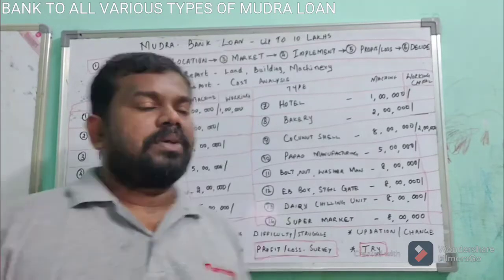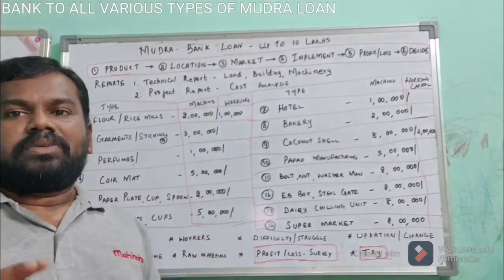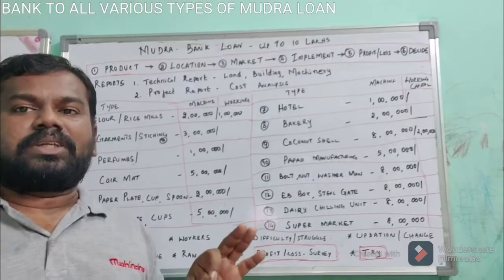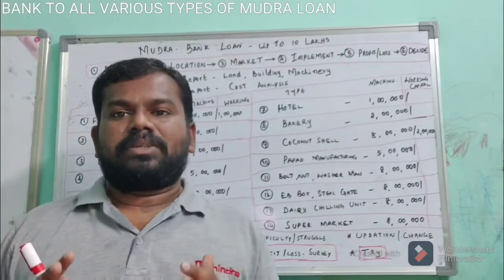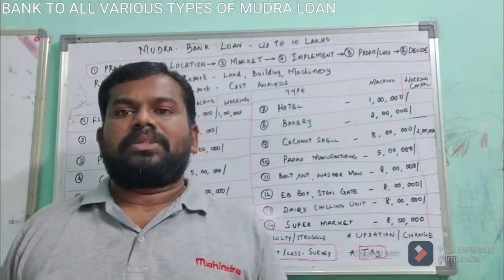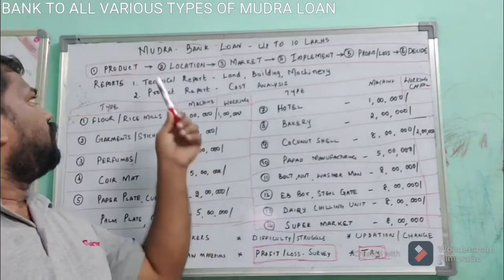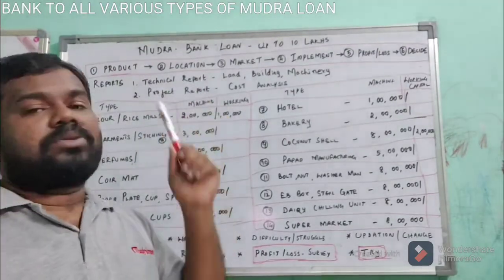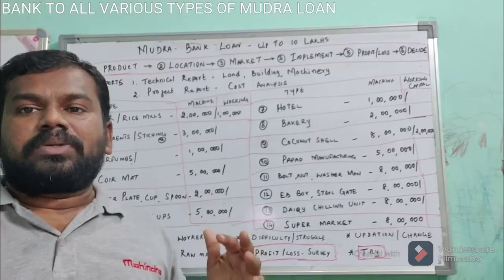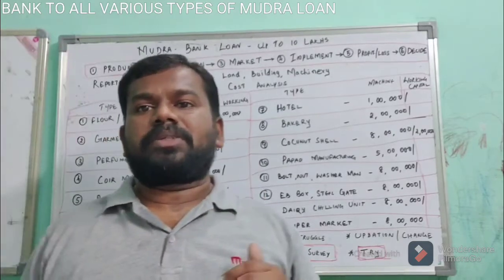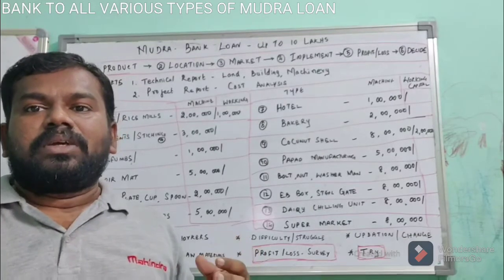For any business, you have to choose a product. Suppose you have selected a dairy unit — a chilling dairy unit where you are collecting milk, cooling it, and sending it for sale. Whether they are making sweets and so on, you have to be choosy about the product. You also have to choose a location where the product is going to sell. If you are choosing a hotel, it must be on the main road or near a bus stand, not in a back lane where no one will come.